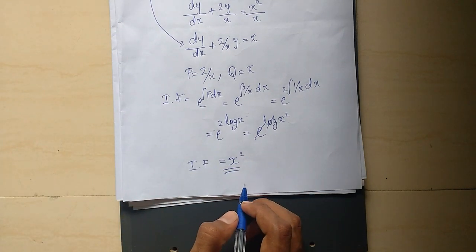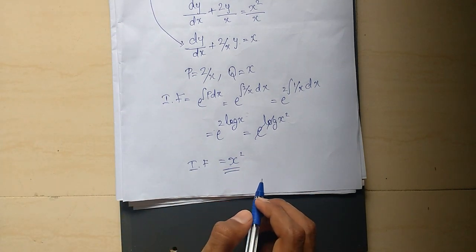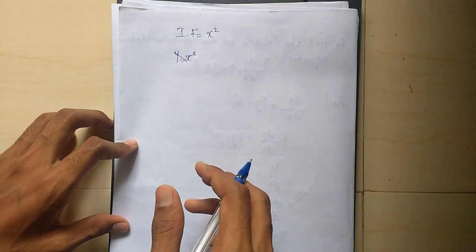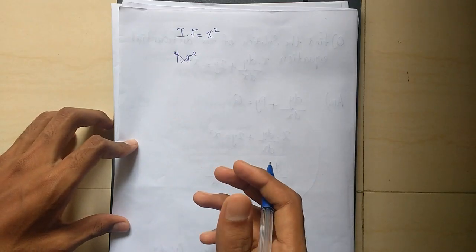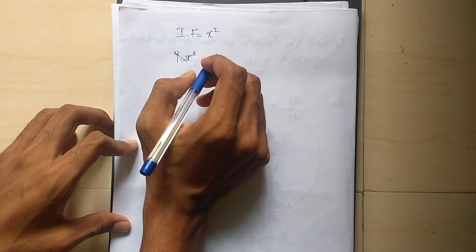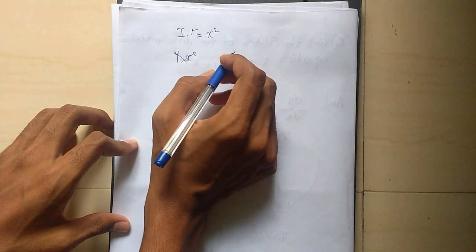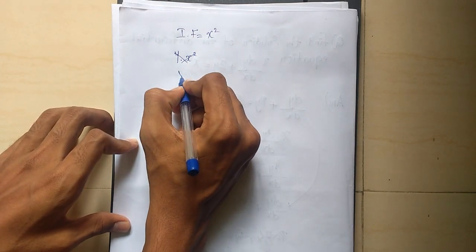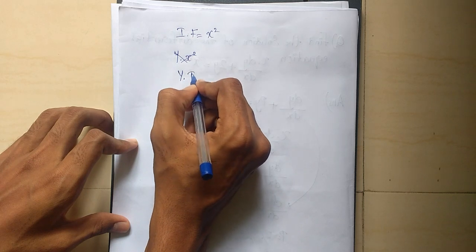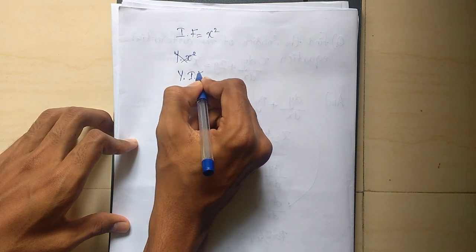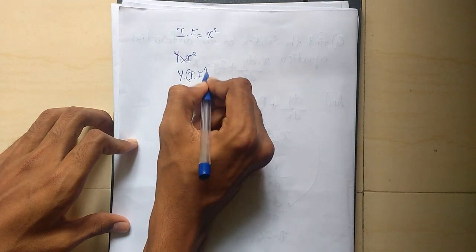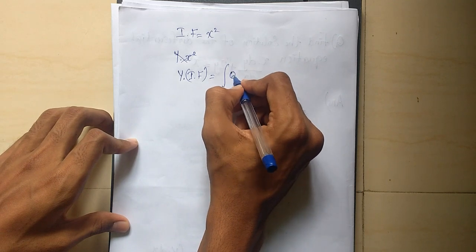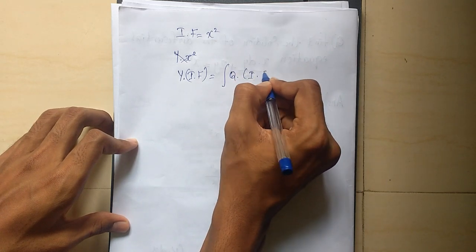Now we have the integrating factor x squared. The answer uses the formula: y into integrating factor equals the integral of Q into integrating factor.